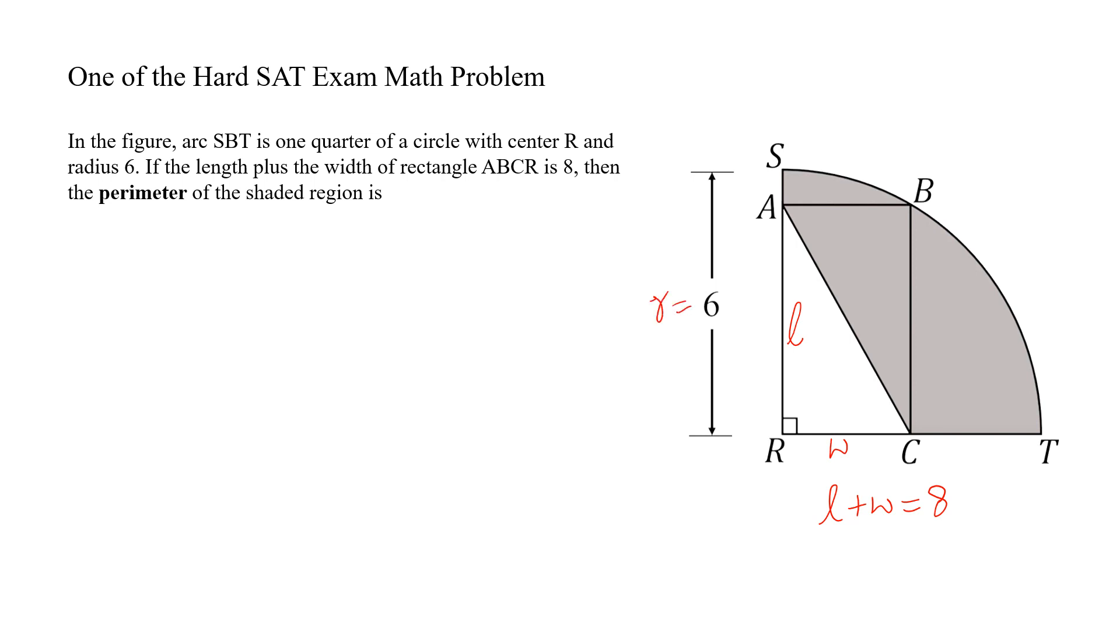The perimeter of the shaded region will be equal to 1/4 of 2πr, plus 6. This is 6 minus length. This region.